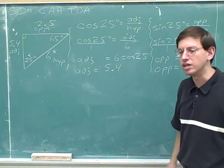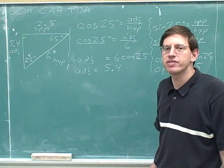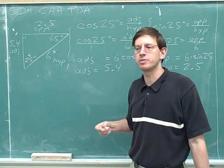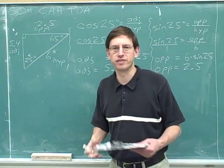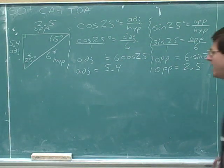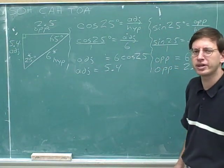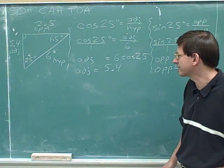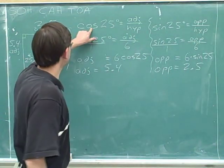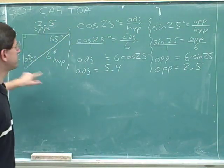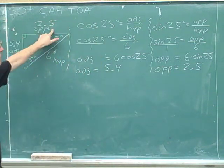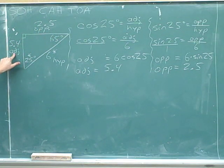Now we've figured out everything about the triangle. Even though we were only given one side and one angle, sine, cosine, and tangent are so powerful that we can figure out all the other sides and all the other angles. I hope you still have your notes from the previous example, because now is a good time to compare. Notice that in this example we used the cosine to find the vertical length and the sine to find the horizontal length.